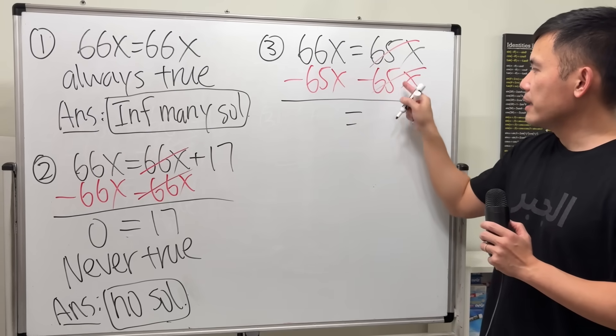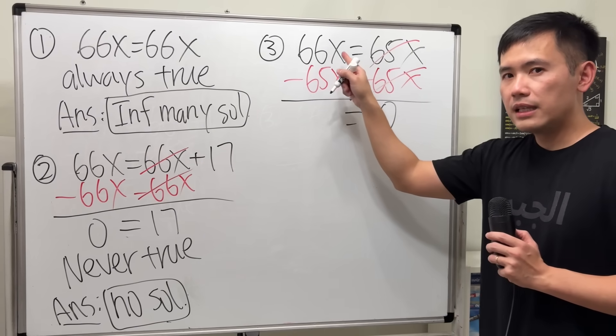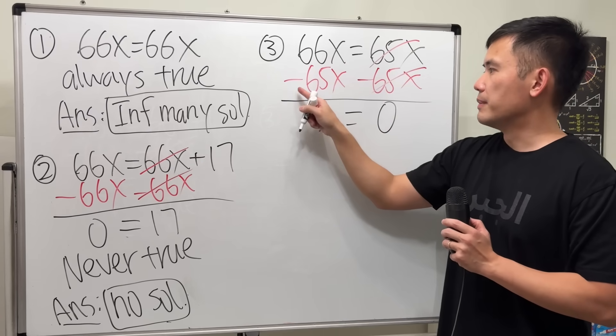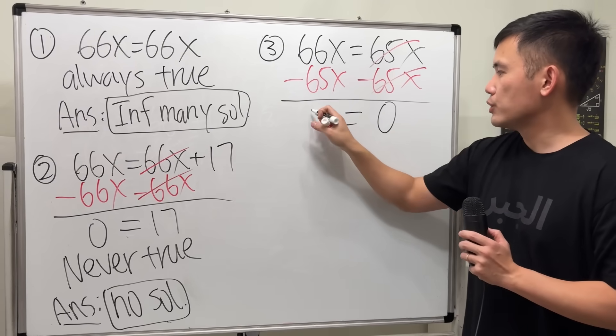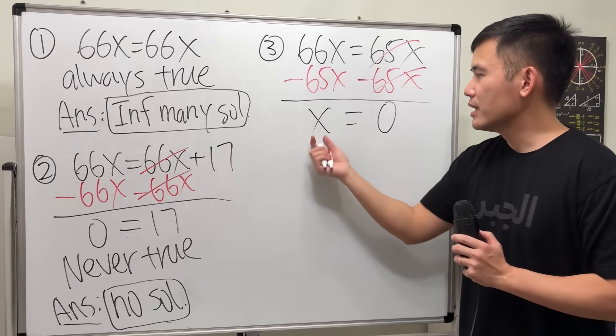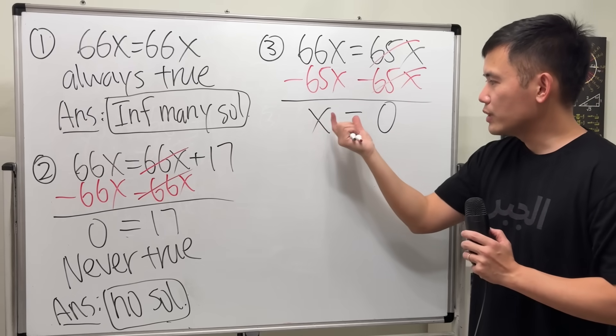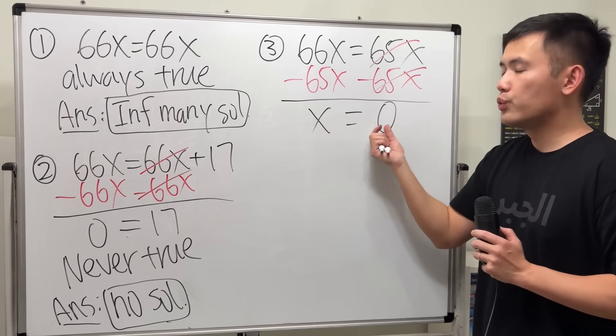On the right-hand side, this equals 0. On the left-hand side, 66x minus 65x. We have 1 times x, which is just x. Now we are done, because we're saying x by itself equals a number.